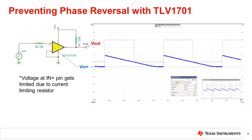Let's take a look at how phase reversal is prevented using the TOV1701. The figure on the left shows the device set up in a non-inverting configuration along with a 10 kilo-ohm resistor in series with the input. The plot on the right shows the output response when the input signal is ramping down to negative 1 volt below ground. The blue waveform is the signal at the non-inverting pin and the red waveform is the output pin of the comparator. Note that the voltage at the non-inverting pin gets clamped and doesn't reach negative 1 volt due to the current limiting resistor and the ESD protection diode. This shows that the operation of the comparator works as intended and the output does not invert.